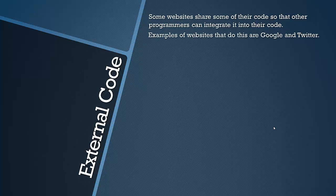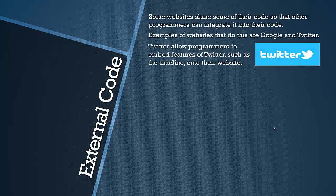I've got two examples of websites that do this. The first one is Twitter. Twitter allows programmers to embed features of Twitter such as the timeline onto their website. You can actually make your own widget on Twitter and put your own timeline with your tweets — embed a box on your website — and they give you the code for it. All you do is put it there and it comes up with your tweets in real time.